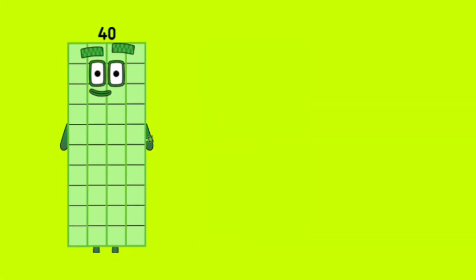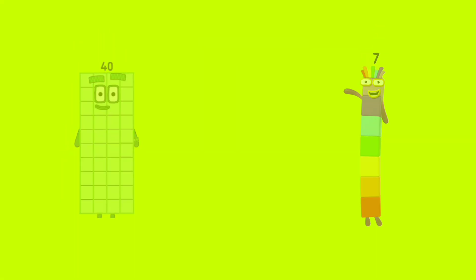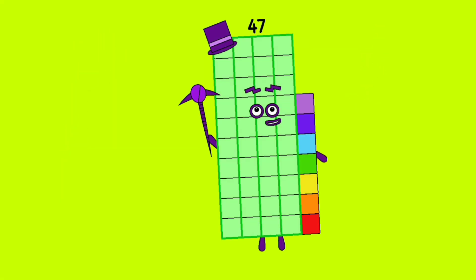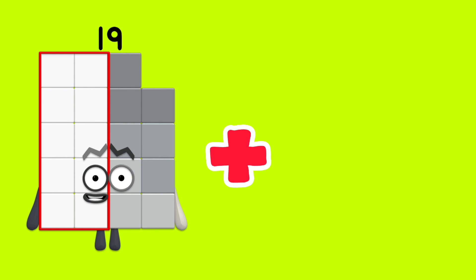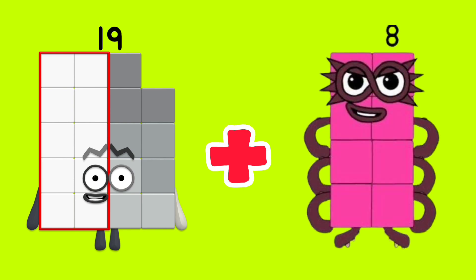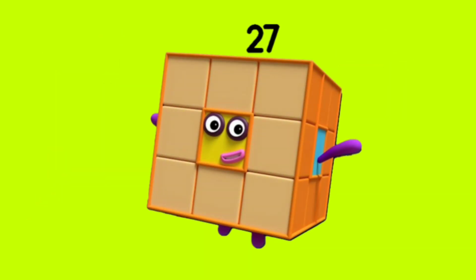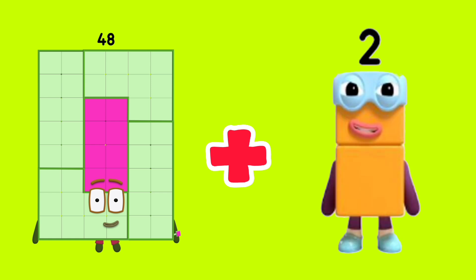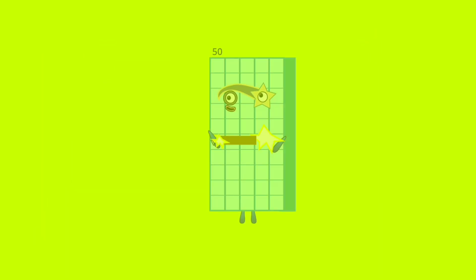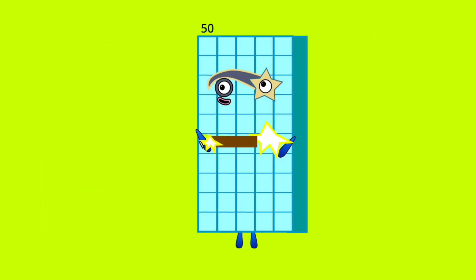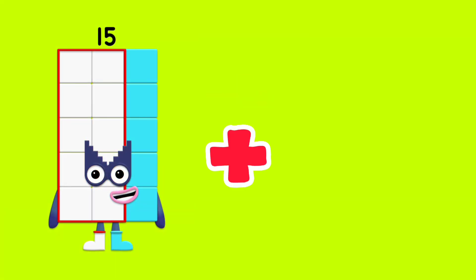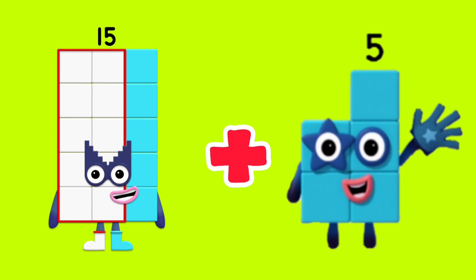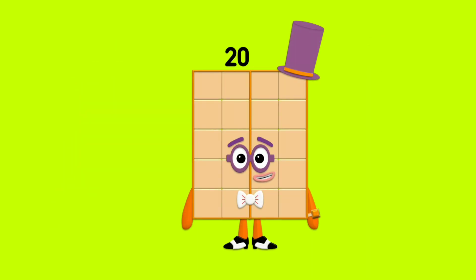40 plus 7 is equal 47. 19 plus 8 is equal 27. 48 plus 2 is equal 50. 50 plus 5 is equal 50.